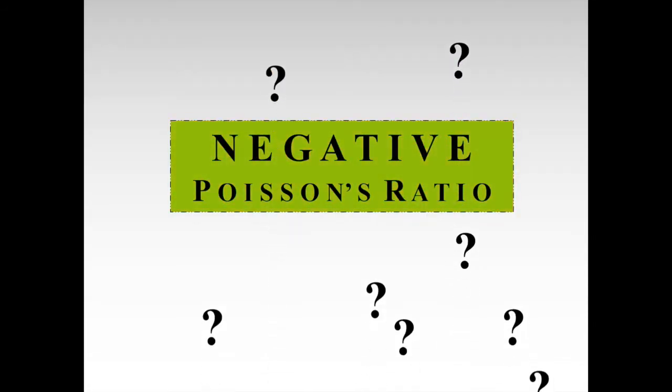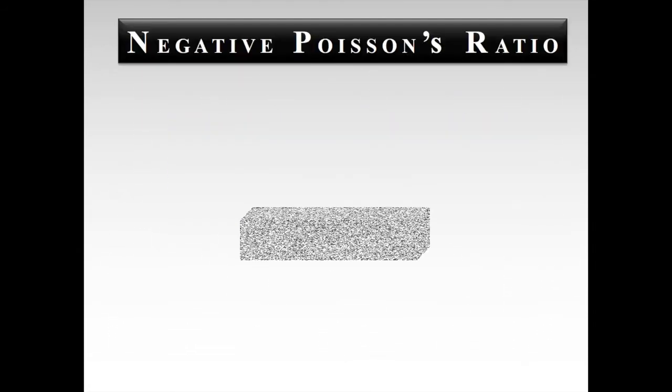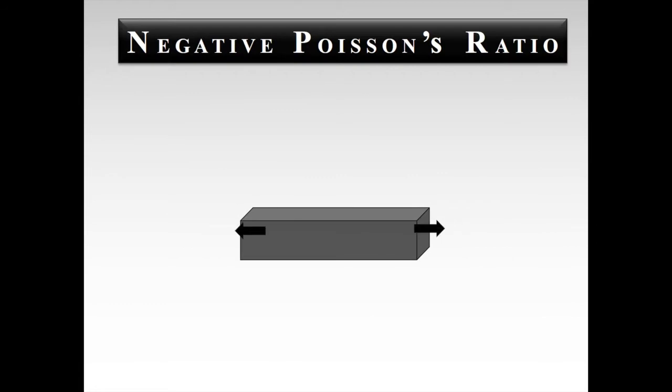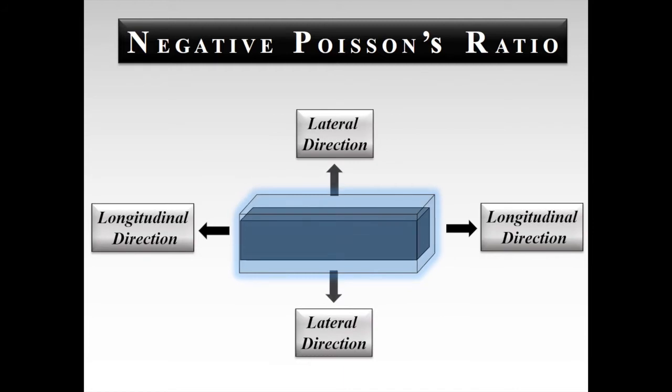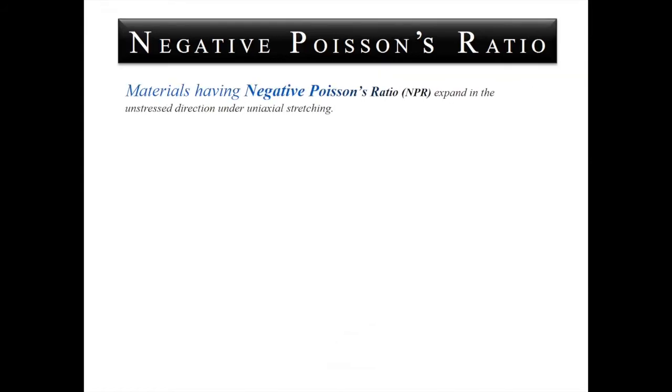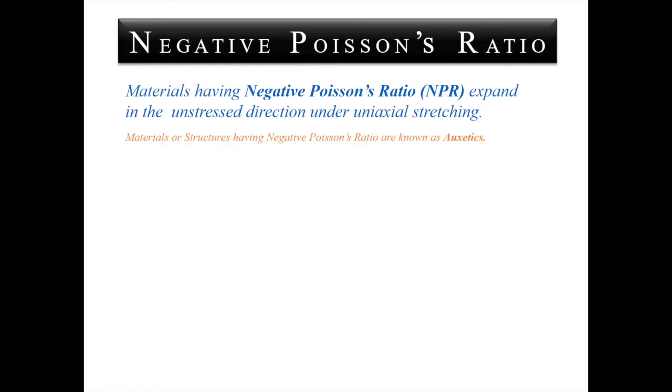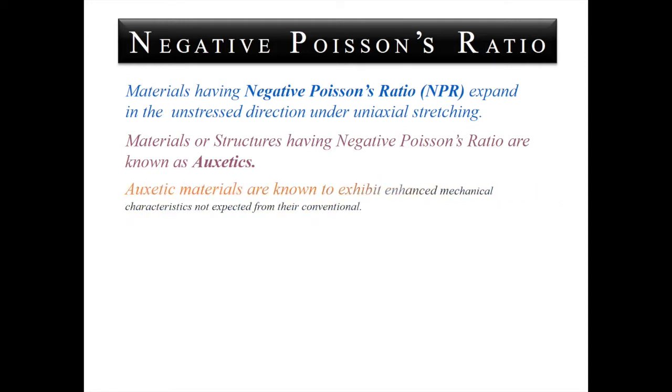But did you know that some materials can have a negative Poisson's ratio? Let us again consider a rectangular block. If we pull this block in the longitudinal direction, unlike the conventional materials, it will expand both in the lateral as well as the longitudinal direction. Materials having negative Poisson's ratio expand in the unstressed direction under uniaxial stretching. These kinds of materials and structures are known as auxetics, and sometimes also referred to as metamaterials. These materials possess improved mechanical properties which can't be observed in conventional materials.